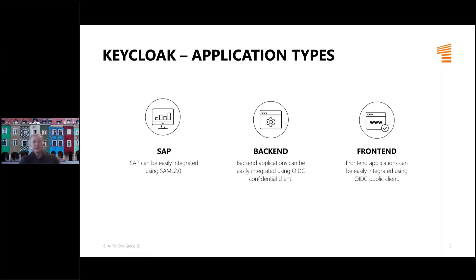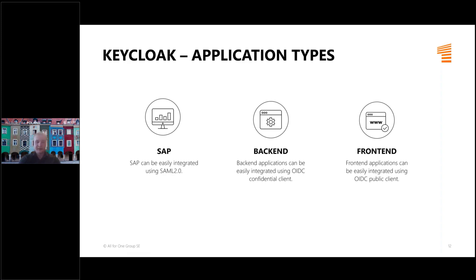OpenID Connect uses JSON web tokens — it's newer, easier to use, and more performant. In normal use cases you should probably use OpenID Connect, but if you need very high security, it's better to use SAML. Most frameworks offer libraries or modules for both protocols, so you can basically choose.